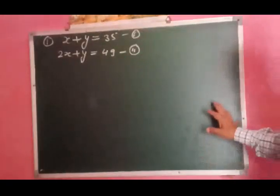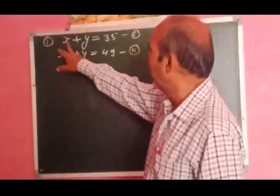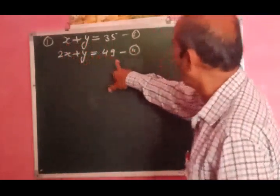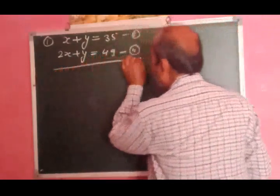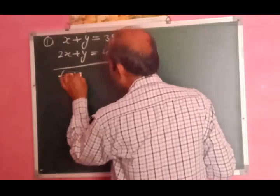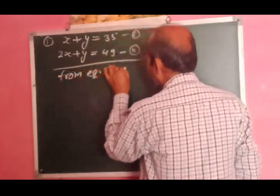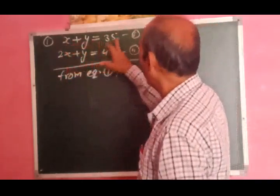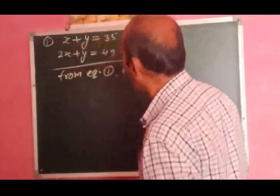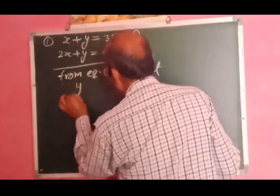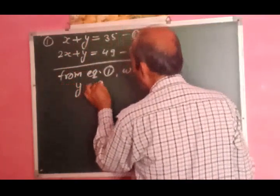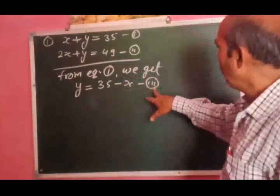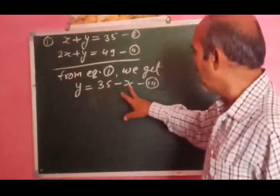For example: equation first है x + y = 35, और equation second है 2x + y = 49. From equation first, we get: या तो x = 35 - y लिख दें, या y = 35 - x. तो हम y = 35 - x लेते हैं — यह आपका third equation प्राप्त हो गया: y = 35 - x.